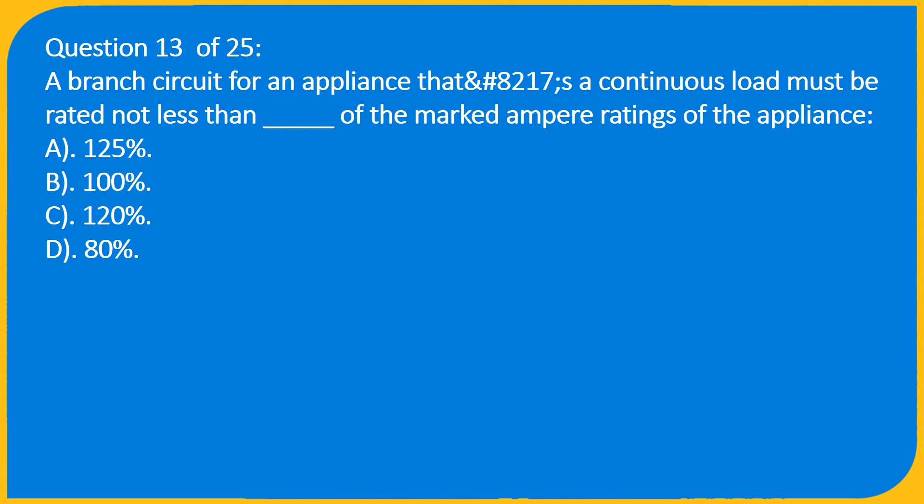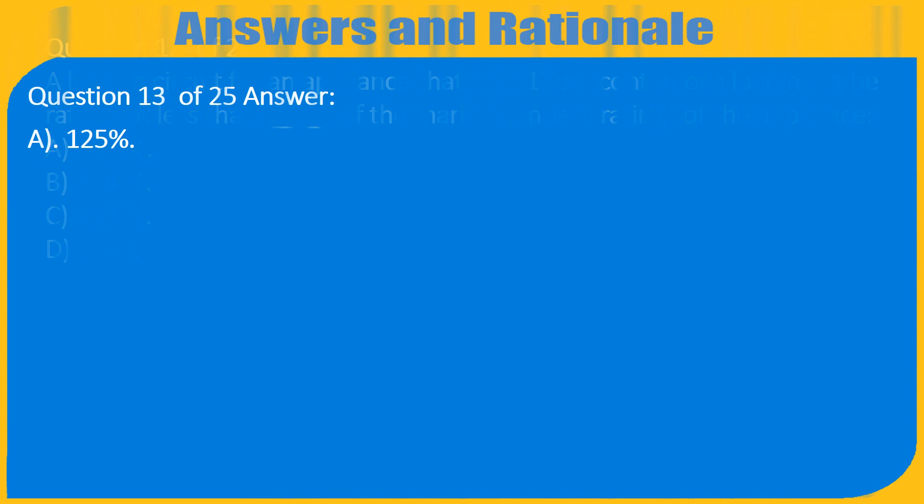Question 13 of 25: A branch circuit for an appliance that is a continuous load must be rated not less than what percentage of the marked ampere rating of the appliance? A. 125%, B. 100%, C. 120%, D. 80%. Answer: A. 125%.